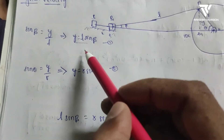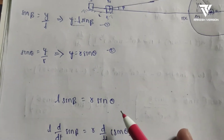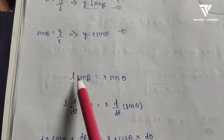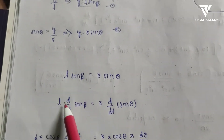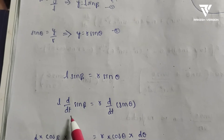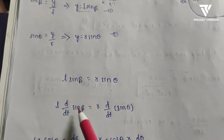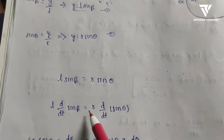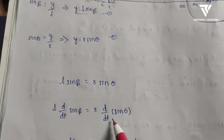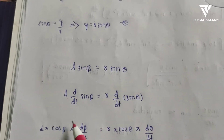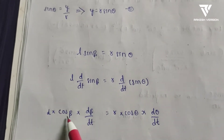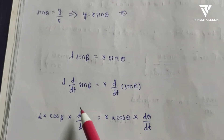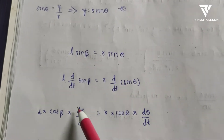Equating the two expressions: L·sin β = R·sin θ. We differentiate both sides with respect to time, treating L and R as constants. The differentiation of sin β becomes cos β, giving L·cos β·(dβ/dt).